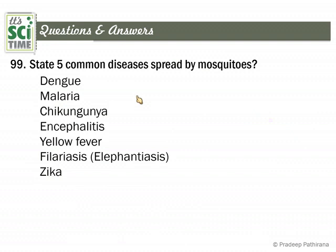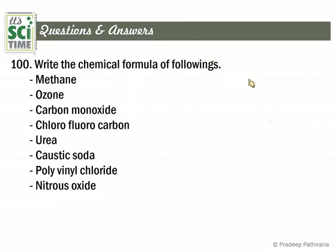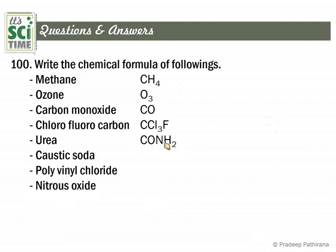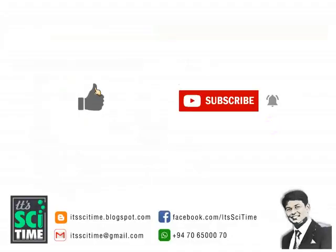Question 100: Write the chemical formulas of the following. Methane: CH₄. Ozone: O₃. Carbon monoxide: CO. Chlorofluorocarbon (CFC): CF₂Cl₂ — carbon, two fluorines, two chlorines. Urea: CO(NH₂)₂. Caustic soda: NaOH. Polyvinyl chloride (PVC): a polymer of vinyl chloride, [CH₂-CHCl]n. Nitrous oxide: N₂O. This is the end of all discussion of the 100 questions.